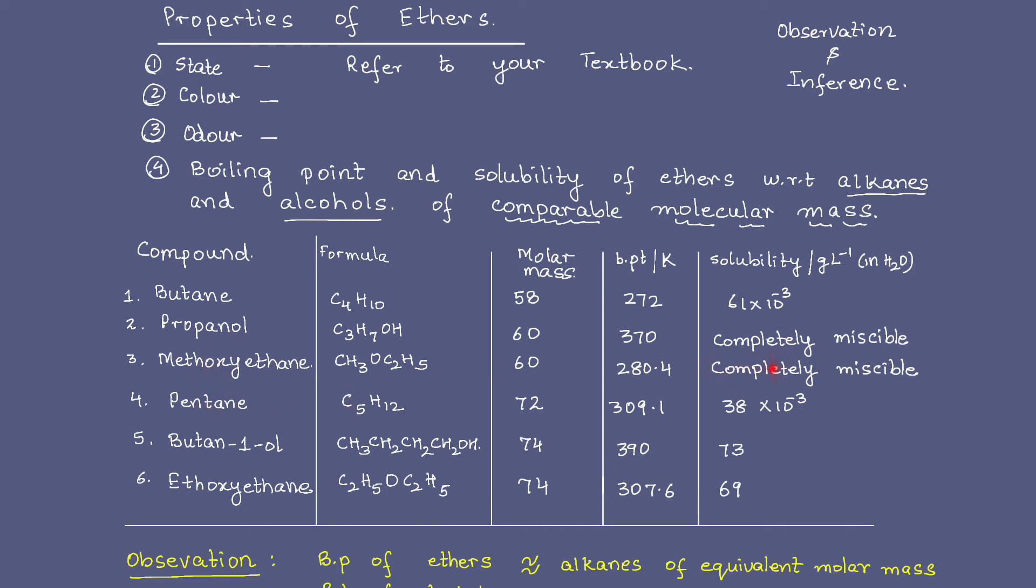Look at that. That means here the ether starts behaving like an alcohol. That means ethers do dissolve in water, just like alcohols. Now we know that in the case of alcohols, the reason for their solubility was hydrogen bonding. That means even ethers are capable of showing hydrogen bonding. Let's compare the next three sets of compounds.